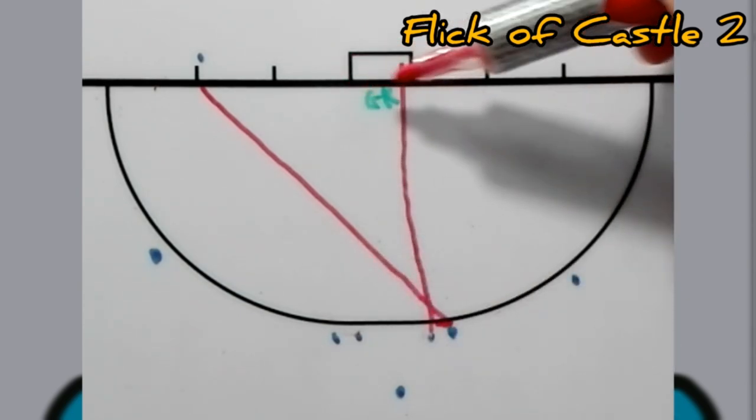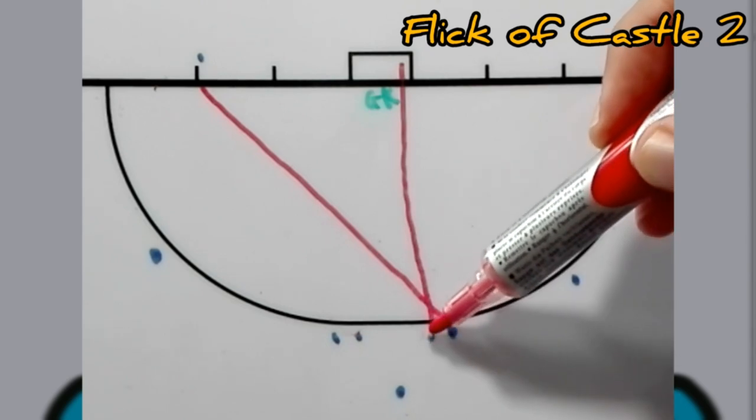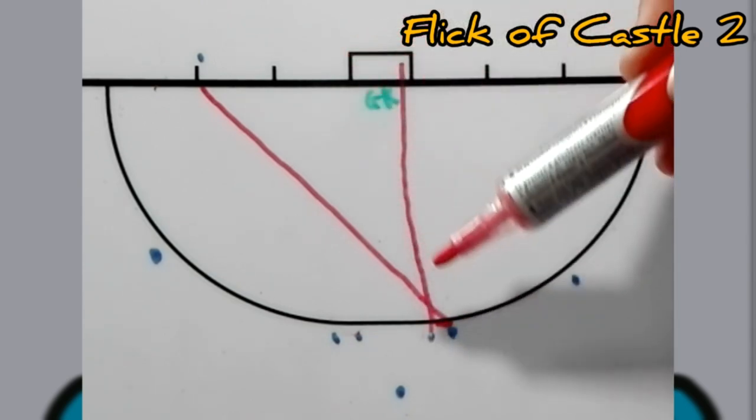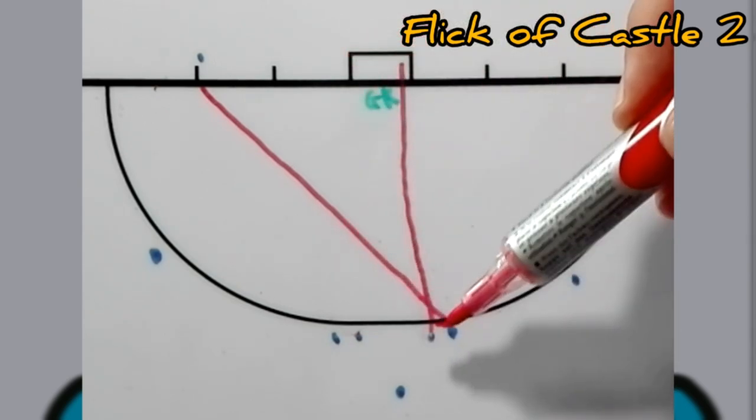The reason why you want to go to castle two is different angles. The keeper is maybe too strong on this side, so now you can actually flick from here towards the stick side. But if you go to castle two it opens up different angles to flick from.